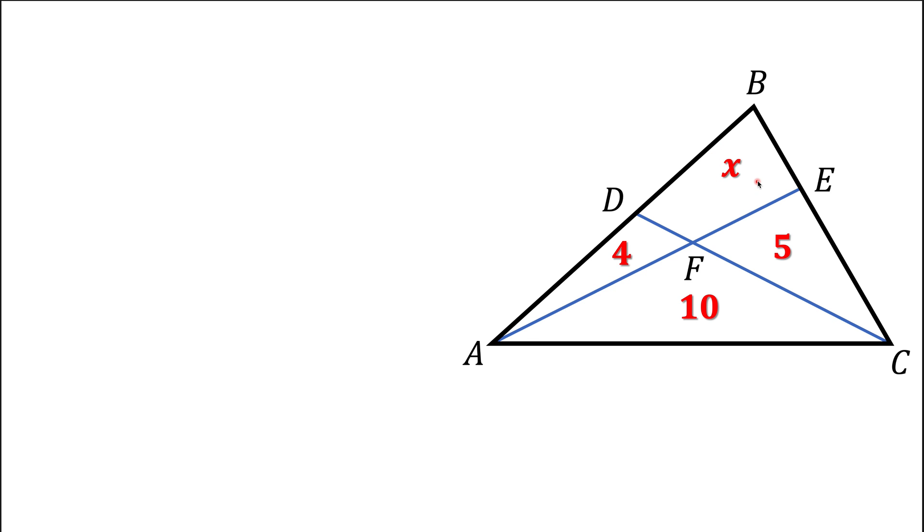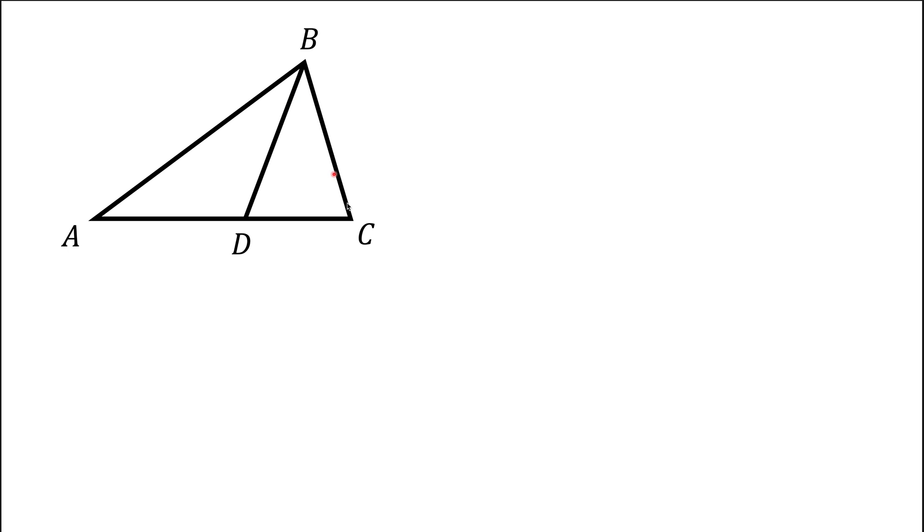This problem and many problems like that could be solved by knowing one fact. So if I have a triangle ABC in this case, and I split it into two triangles by the side BD, I have a blue triangle and I have a pink triangle.